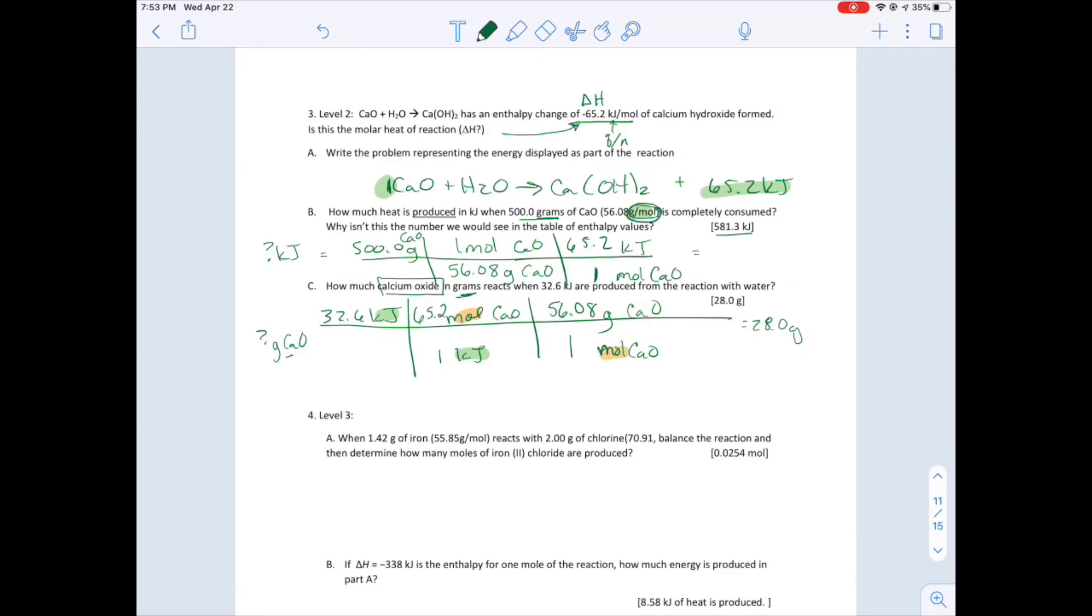People get antsy about sig figs. So in this problem, it started with 1, 2, 3. Most of the time, that one is going to be your key. You should do a quick few checks. The 65.2 has three sig figs, and the 56.08 has four sig figs. So your final answer, the 28.0, should have three sig figs.